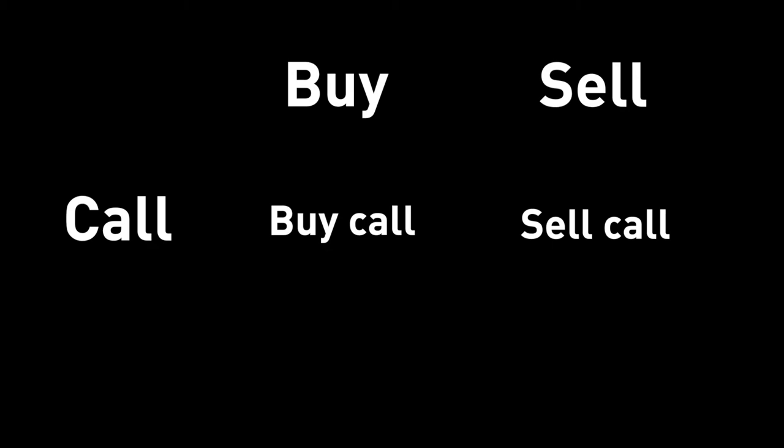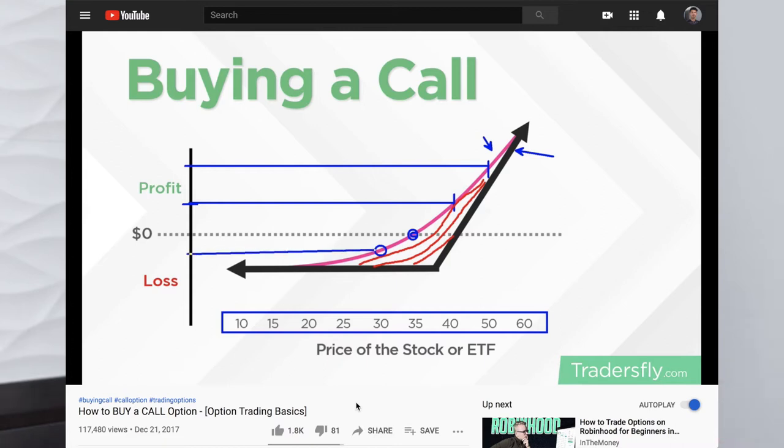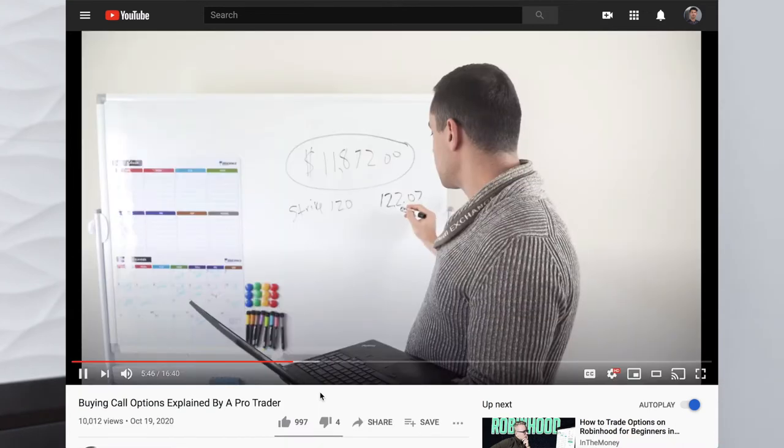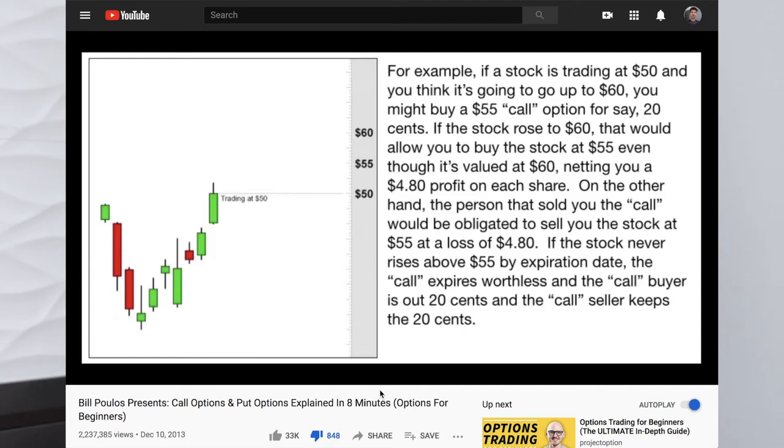Good morning everyone. My name is Justine. Looking at that option trading 2x2 matrix — buy, sell, call, put — it's quite confusing, isn't it? I watched a ton of YouTube videos. There are just so many graphs, so mathematical. They are either super long or don't really help beginners understand what options are, or maybe long and useless at the same time. So my designer brain turns on: there has got to be a better way.